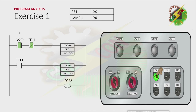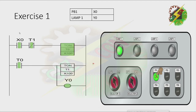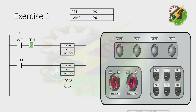This cycle will only stop if we release PB1. Let's have our simulation. As you can see, the blinking stops after you release PB1. And that's how we solve exercise 1.